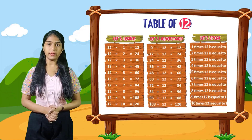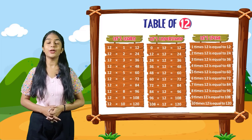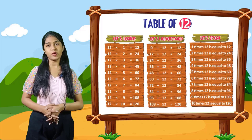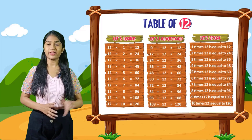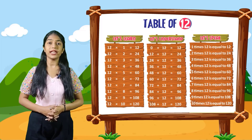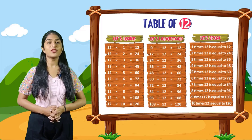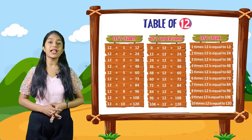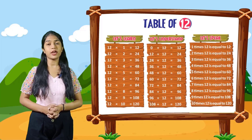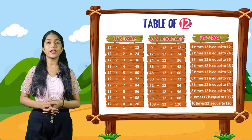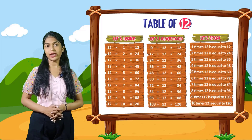Now let's speak out with me. 1 times 12 is equal to 12. 2 times 12 is equal to 24. 3 times 12 is equal to 36. 4 times 12 is equal to 48. 5 times 12 is equal to 60. 6 times 12 is equal to 72. 7 times 12 is equal to 84. 8 times 12 is equal to 96. 9 times 12 is equal to 108. 10 times 12 is equal to 120.